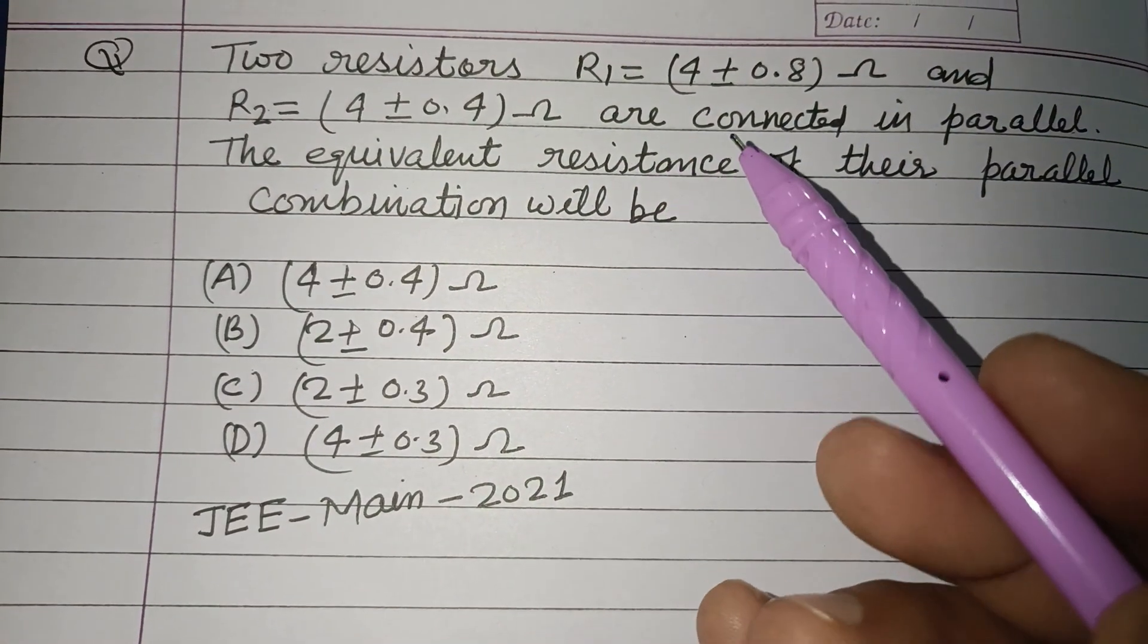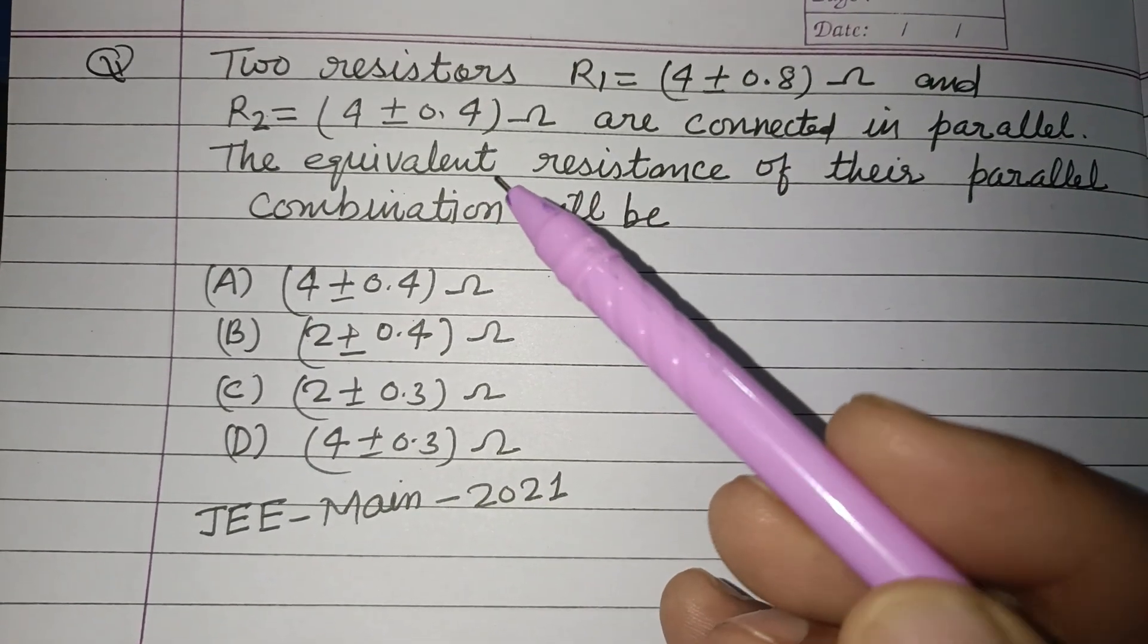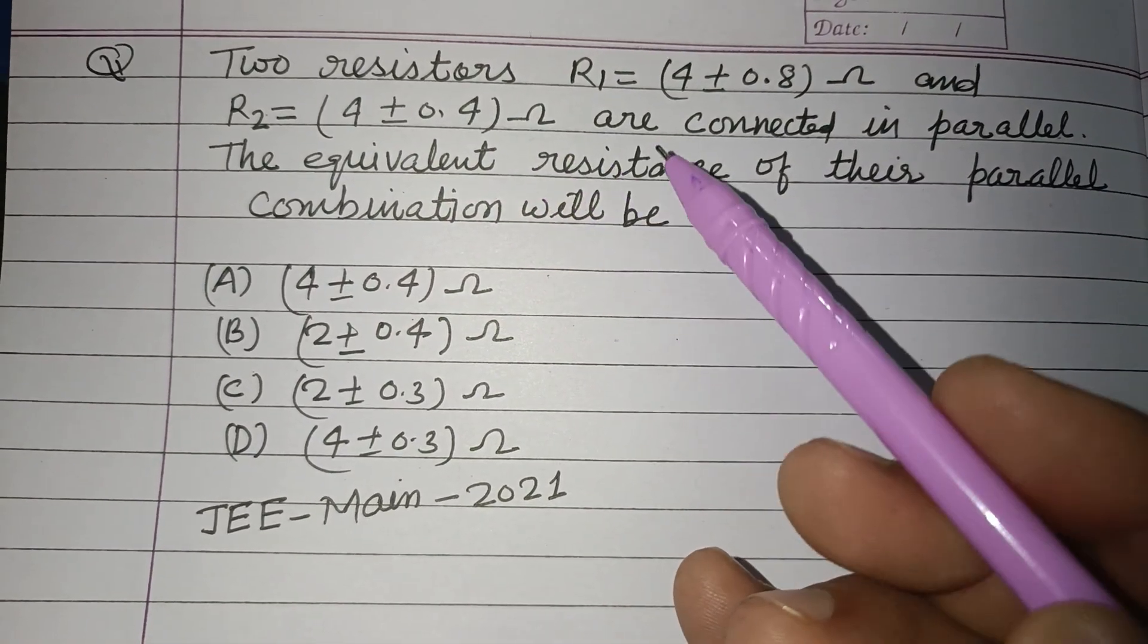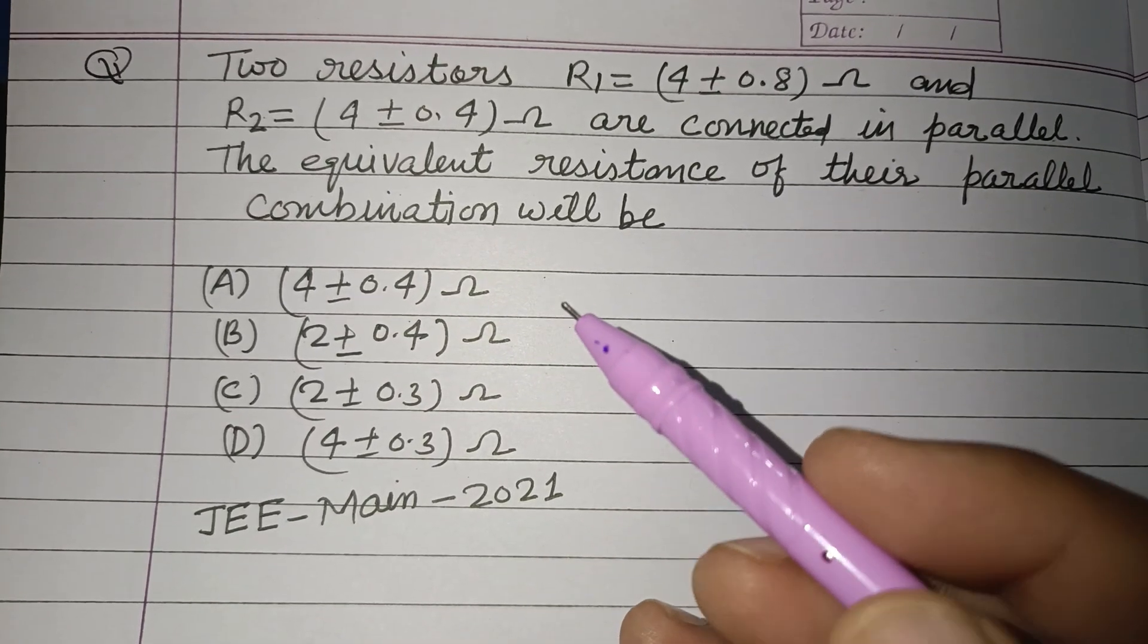Two resistors R1 equal to 4 plus minus 0.8 ohm and R2 equal to 4 plus minus 0.4 ohm are connected in parallel. The equivalent resistance of their parallel combination will be.